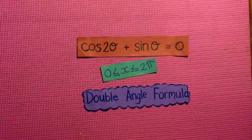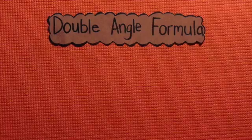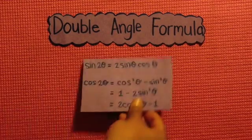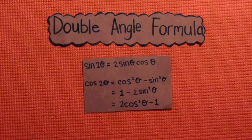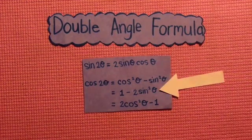To begin solving this equation, I will need to know an important trig identity called a double angle formula. These are the identities for the double angle formula. In specific, I will choose this one so that I only have sin in my equation.